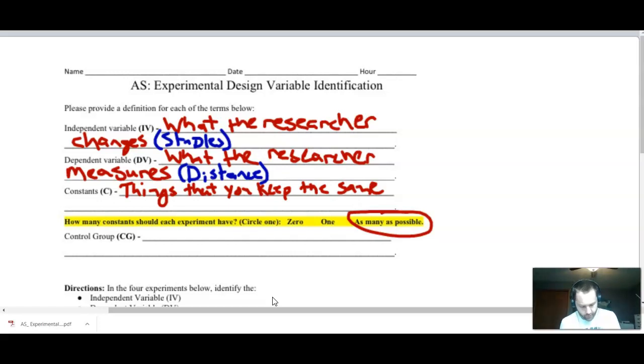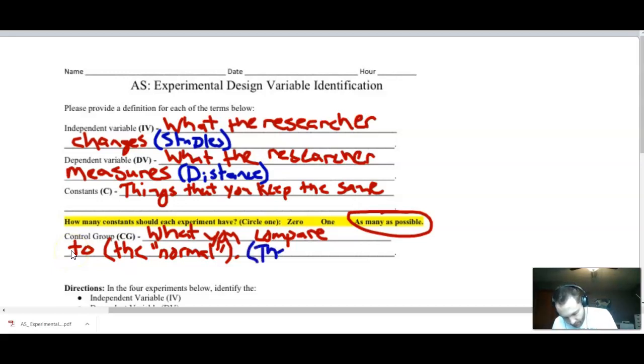How many constants should each experiment have? I know a lot of times I say list at least five. Reality is you want as many as possible. When we do this in class, we can usually come up with like 14. Even air temperature will make a difference in how a plane flies. Control group is tough for students, but a definition for control group, I would say best definition would be what you compare to. A lot of times I like to kind of call it the what's the normal of something? What's the regular? So going back to that paper airplane activity, we're going to take our stapled paper airplane and compare that to just a regular plain paper airplane. So the plain airplane would be our normal.